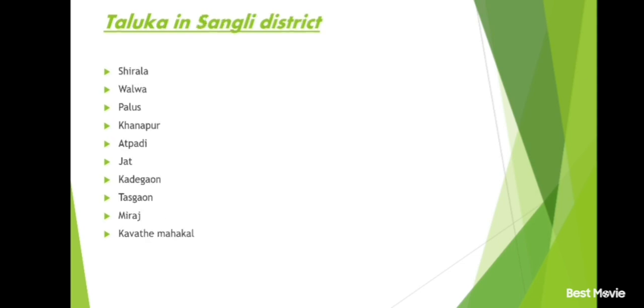Raigad district and its talukas: Panvel, Alibag, Karjat, Khalapur, Pen, Mahad, Roha, Uran, Mangaon, Shrivardhan, Murud, Sudhagad, Alibaug, Poladpur, Tala.